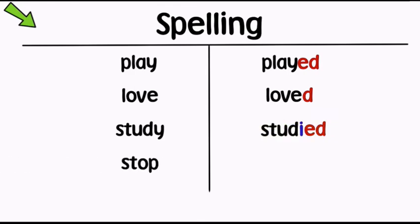For verbs that end in one vowel plus one consonant, we double the consonant and add -ed.